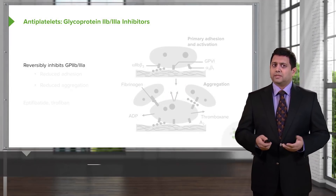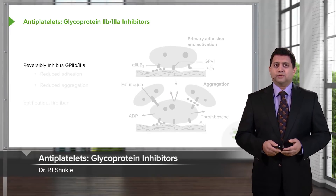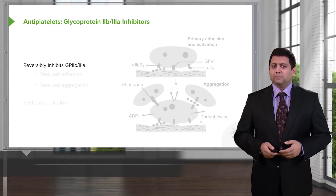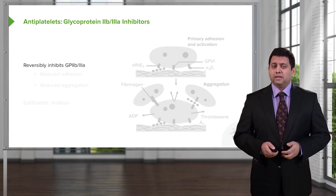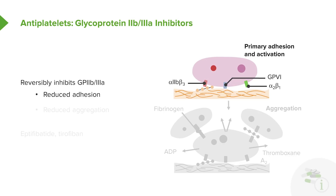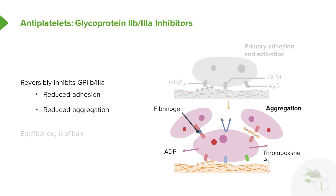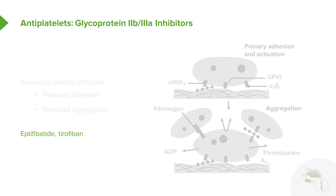The next group of drugs are the glycoprotein 2B3A inhibitors. We've already spoken about GP2B3A and illustrated how important it is in platelet adhesion and aggregation. These inhibitors produce reduced adhesion and reduced platelet aggregation. You don't need to know the individual drugs as much as you need to know that they're used in the cath lab to inhibit platelet aggregation after catheterization.